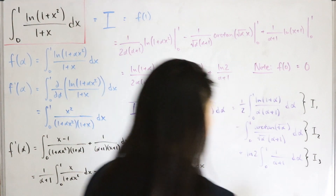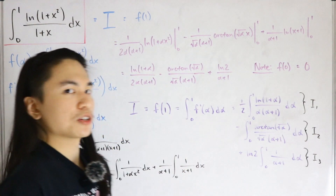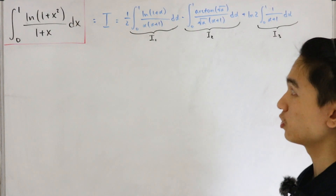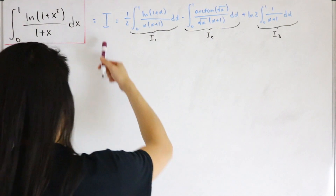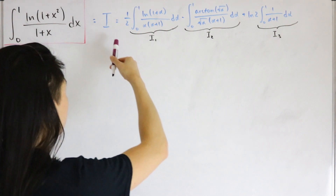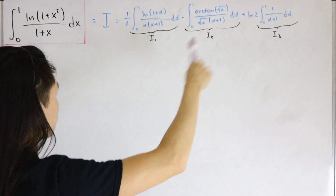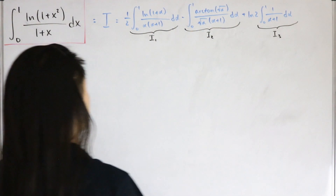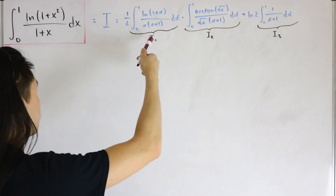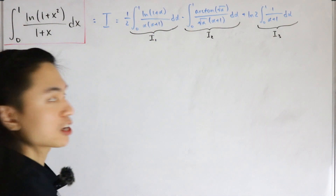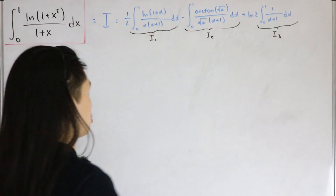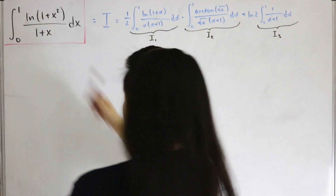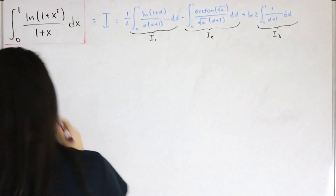So we have three different integrals to calculate. I'll erase the board and continue. To reiterate: I equals the linear combination of I₁, I₂, and I₃. We evaluate each integral one at a time, substitute each value back in, and get our final answer. Let's start with I₁.